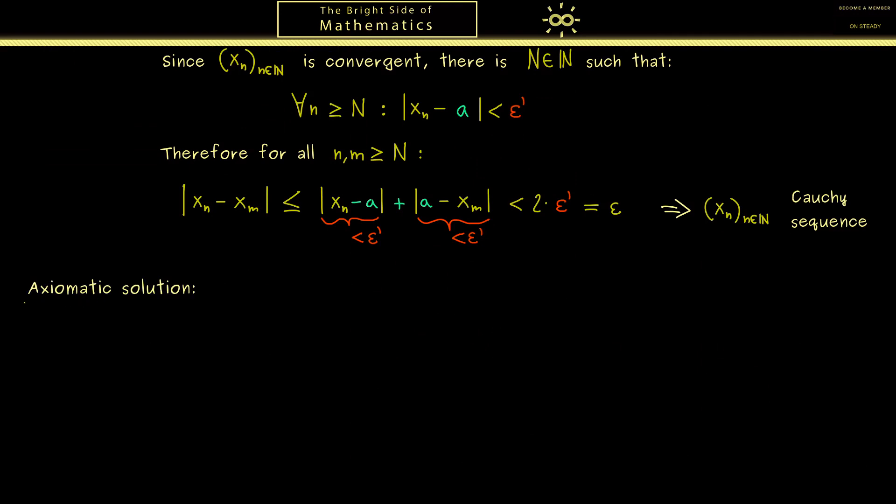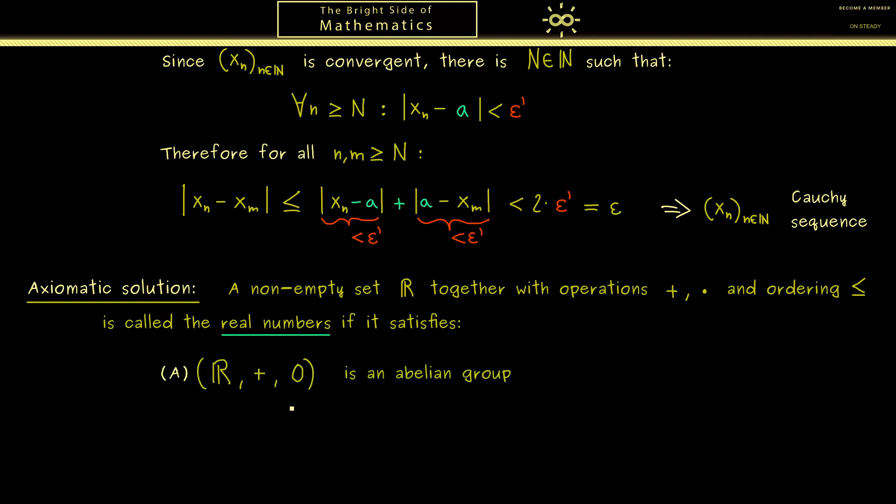So let's call this the axiomatic solution, because here we don't care about the construction. Indeed that is often the way one starts with the real numbers because you just have a given rule set with which you can solve your problems. Of course what we need here is a non-empty set we call ℝ together with 2 operations, addition and multiplication, and an ordering less or equal. Now these things together we call the real numbers if they fulfill all the rules we want. Essentially we have all the properties we had for the rational numbers plus one additional. Okay, so let's list the ones we already know and I want to start with the rule I call (A) for addition. It tells us that the set ℝ together with the operation addition and the neutral element 0 is an abelian group. So we have associativity, a neutral element, inverses, and also commutativity.